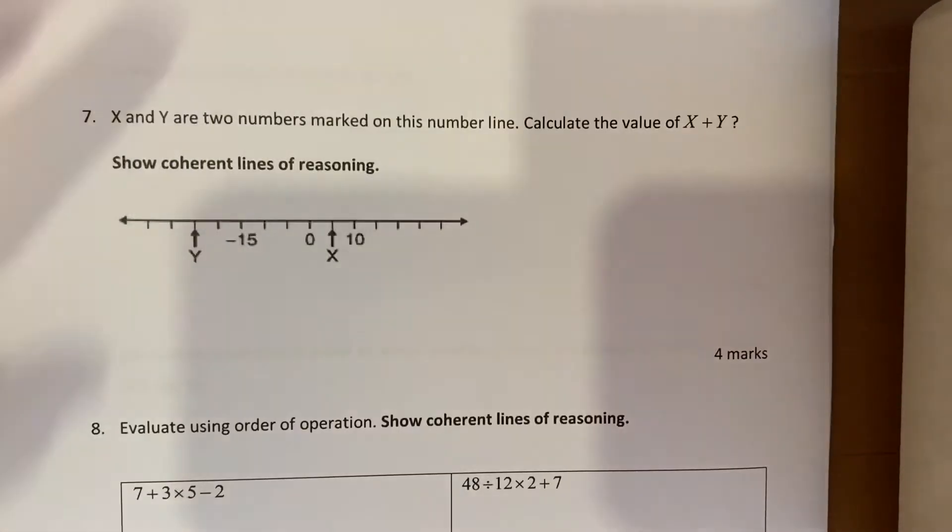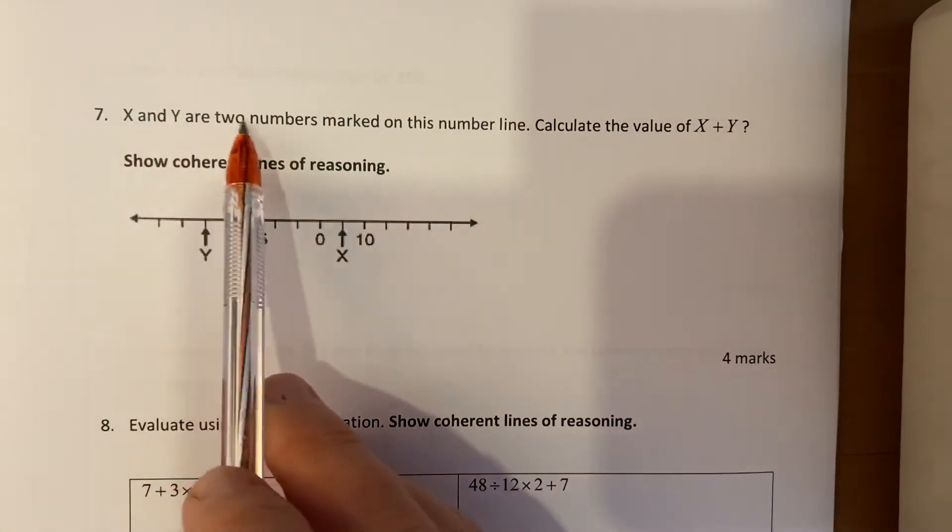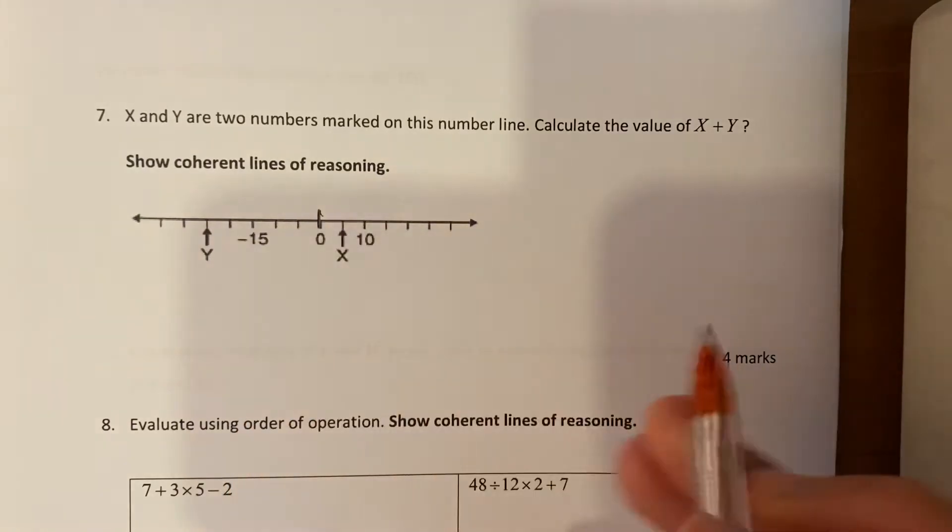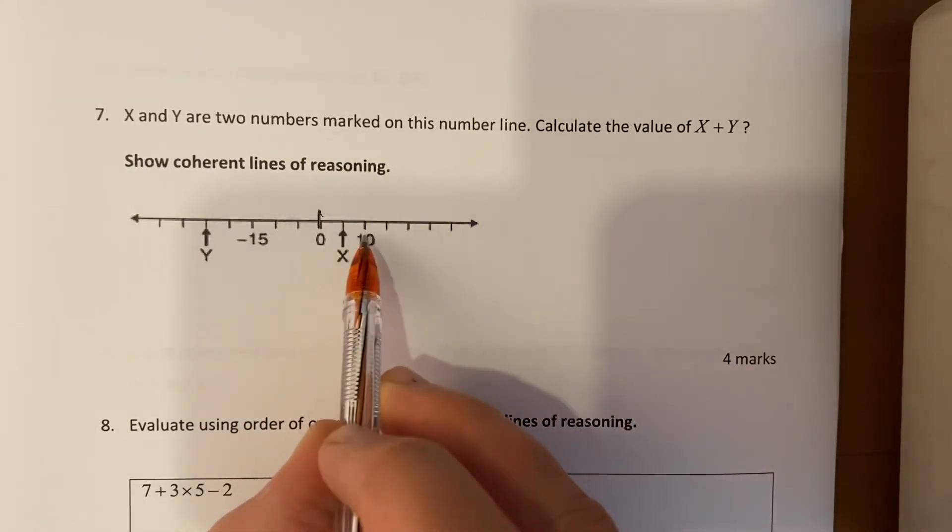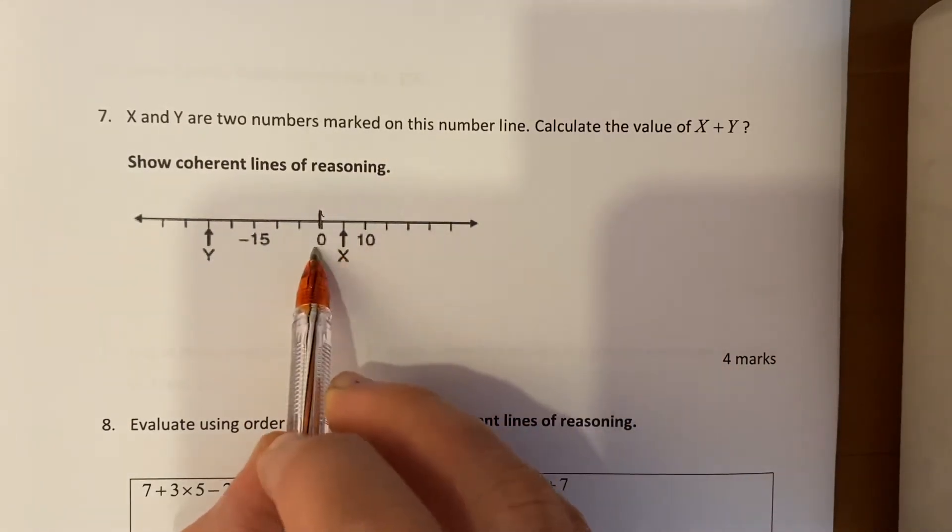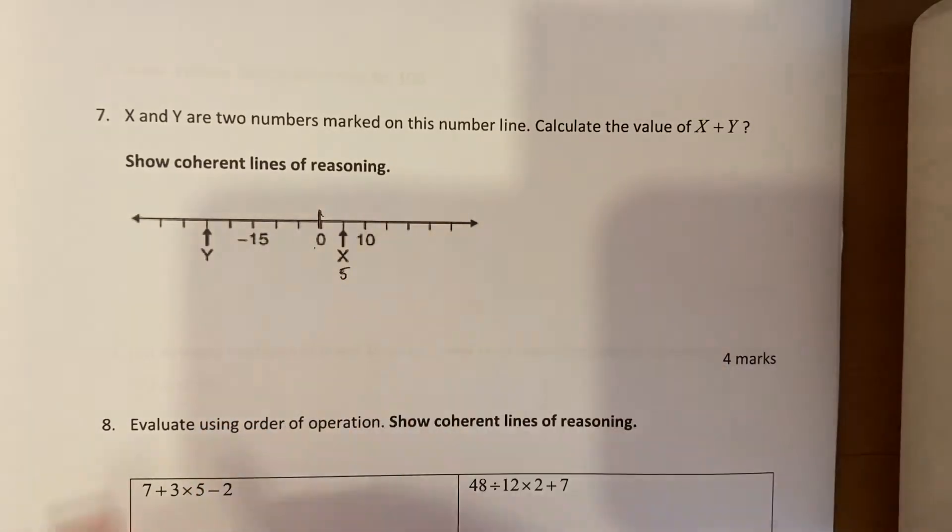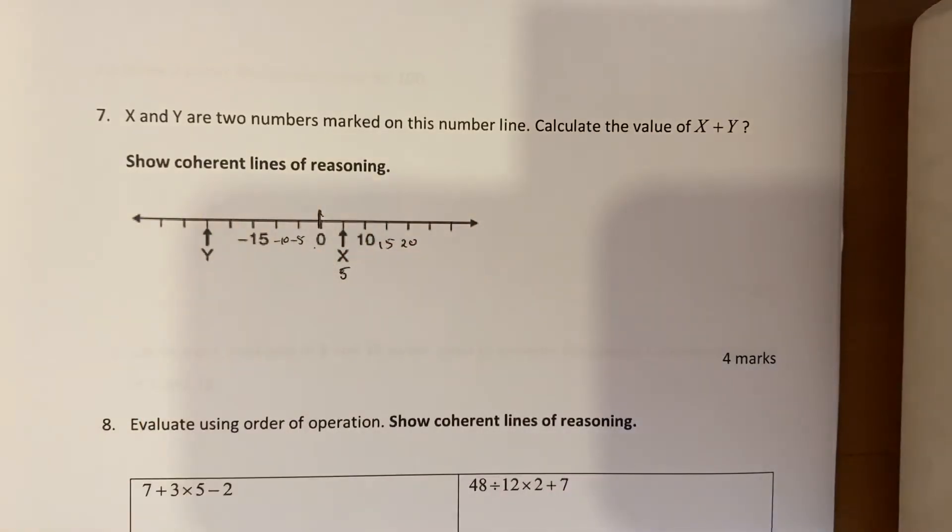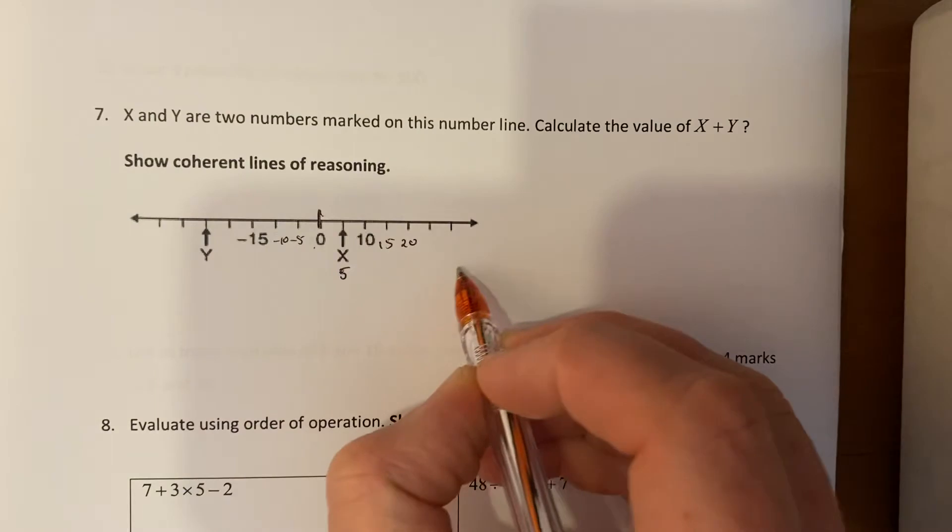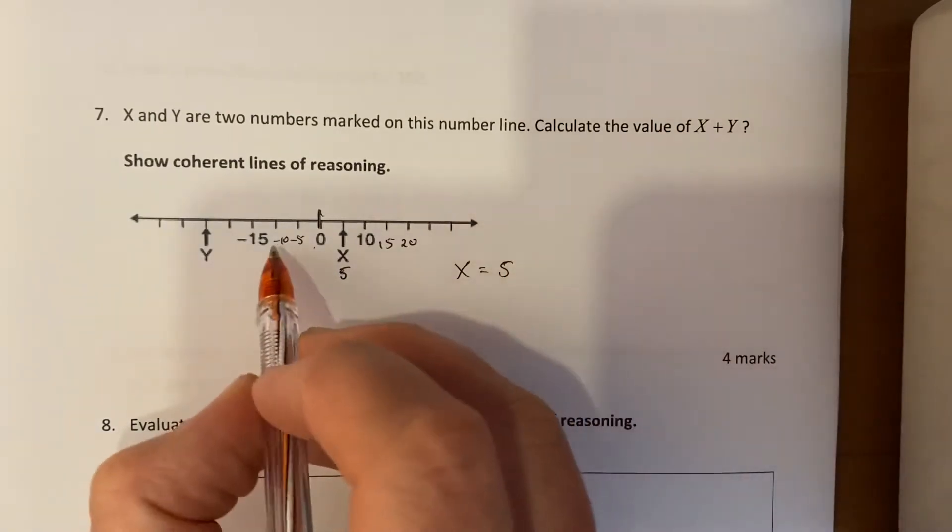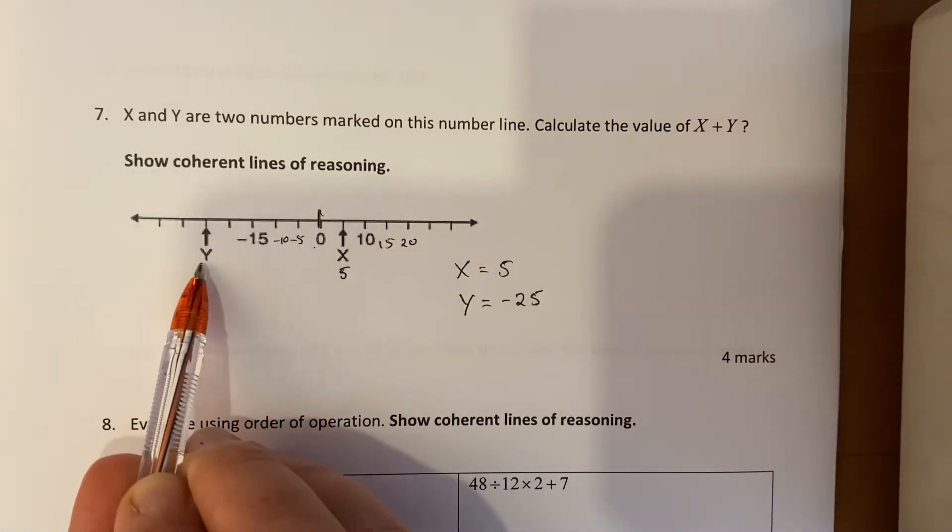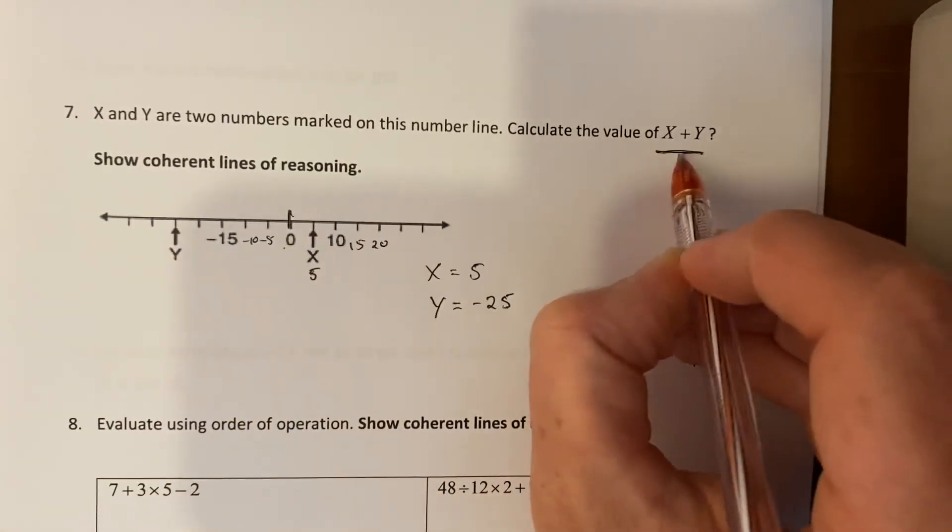A different type of question here: x and y are two numbers marked on this number line. So here's a number line, here's zero. Now it looks like this number line's going up in fives, because if that's 10 (not zero), this must be 5, 15, 20 and so on, this is minus 5, minus 10 and so on going backwards. So I know x is 5 and I know y then would be negative 25 from where it is on the number line.